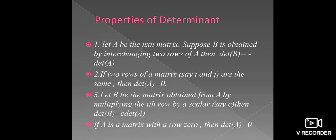Now, see the properties of determinant. First one, let A be an m×n matrix. Suppose B is obtained by interchanging two rows of A, then det(B) = -det(A).